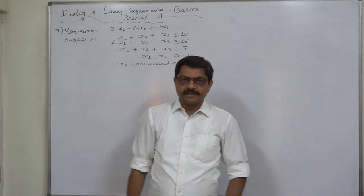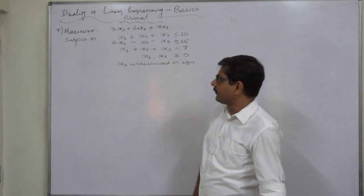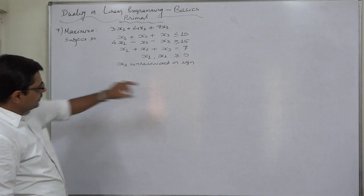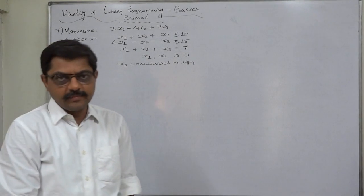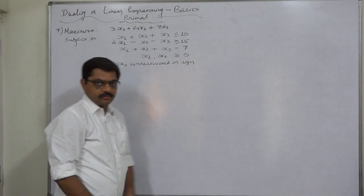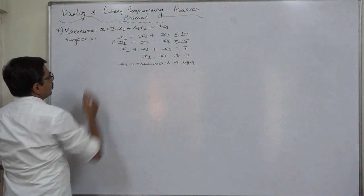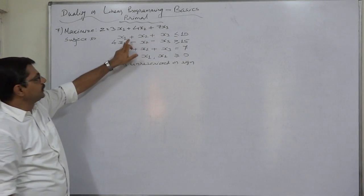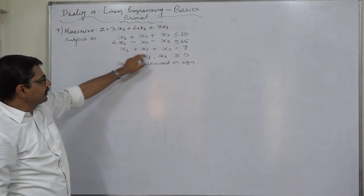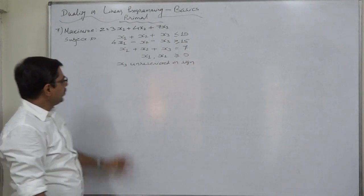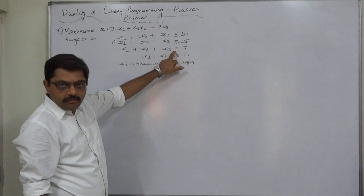Hello and welcome again. Let us take the last case of duality — the last case where we are going to construct the dual of a linear programming problem. This is a very special case: it has equality as well as an unrestricted variable. Let us start by checking: maximize z = 3x1 + 4x2 + 7x3, subject to x1 + x2 + x3 ≤ 10, 4x1 − x2 − x3 ≥ 15, x1 + x2 + x3 = 7, x1 and x2 non-negative, and x3 unrestricted in sign.